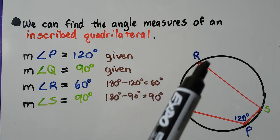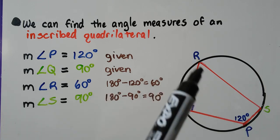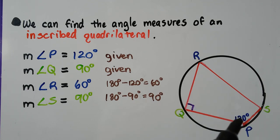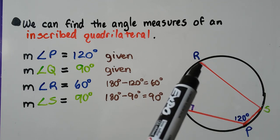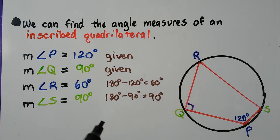The measure of angle R is going to be 180 degrees minus that 120, which is 60. And if Q is 90, and they have to total 180, S must be 90.